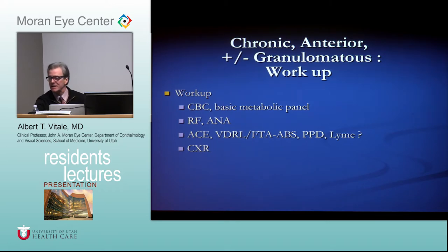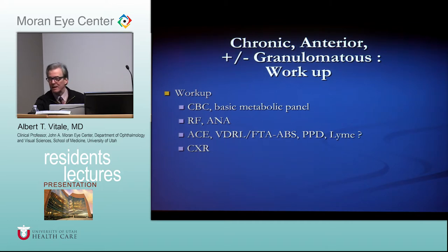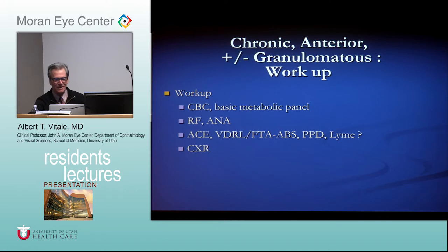ANA is actually useful here because ANA positivity in a pauciarticular child with non-granulomatous anterior uveitis is a risk factor for uveitis. Lyme disease serology should be ordered in an endemic area — for example, if you're in New York City or Long Island. If you're not in an endemic area and nothing else is tipping you over, you wouldn't order it.